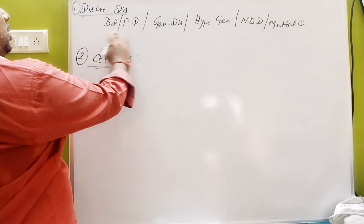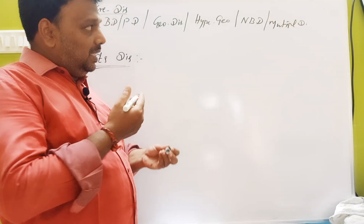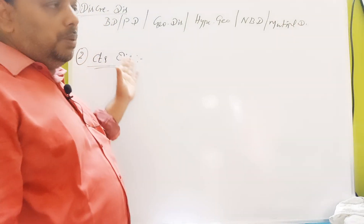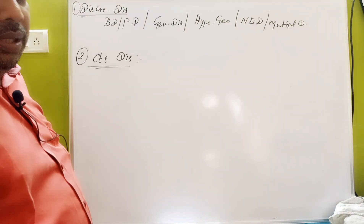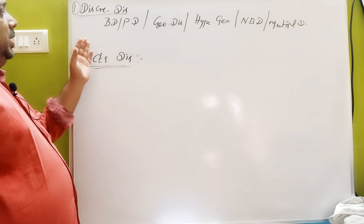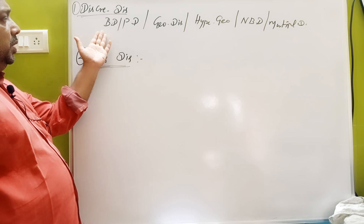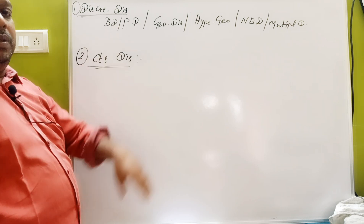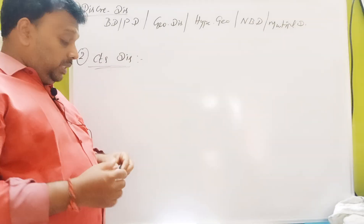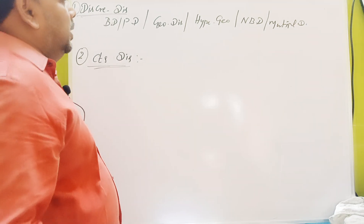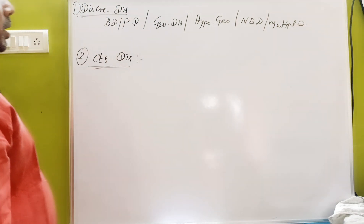This is the Binomial distribution. PHD, Binomial distribution — we can do this shortcut now. We can do this, we can create a simple shortcut.